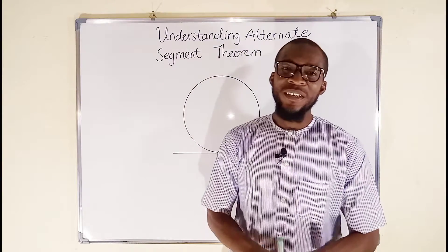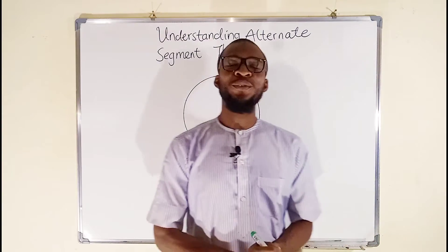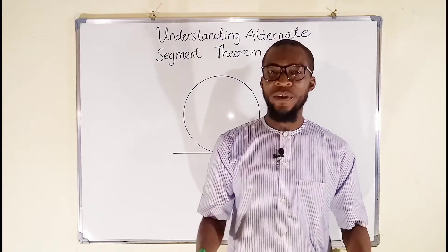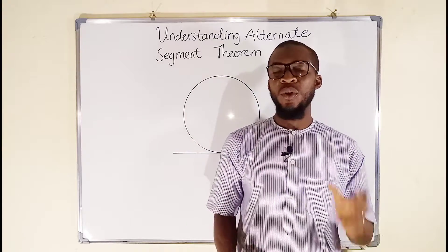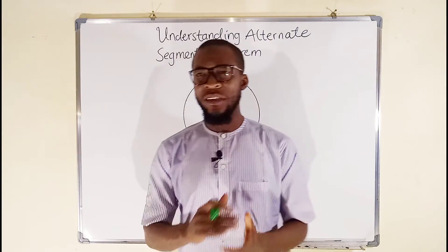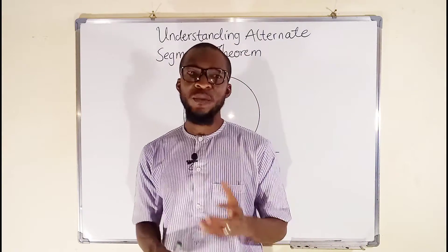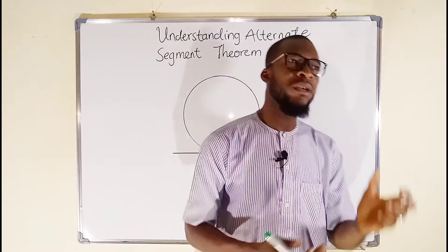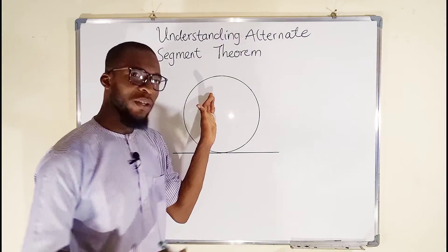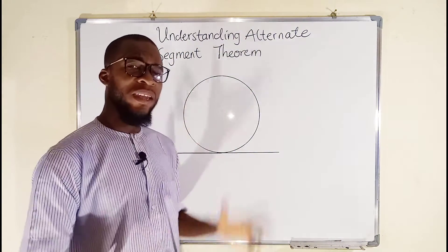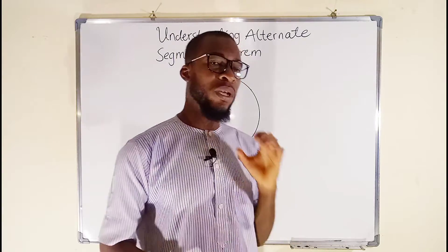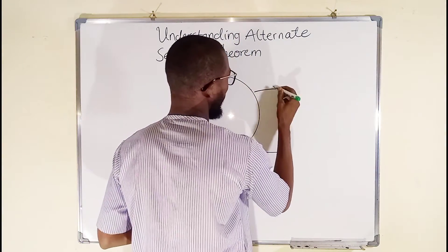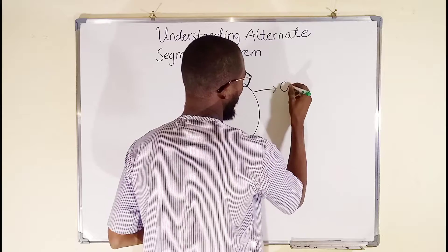Hello, good morning viewers. The title of this tutorial is 'Understanding the Alternate Segment Theorem.' To understand this theorem clearly, let us define some terminologies. First of all, we need a circle. I have already constructed my circle. Any part of a circle is called the circumference, so this is the circumference.